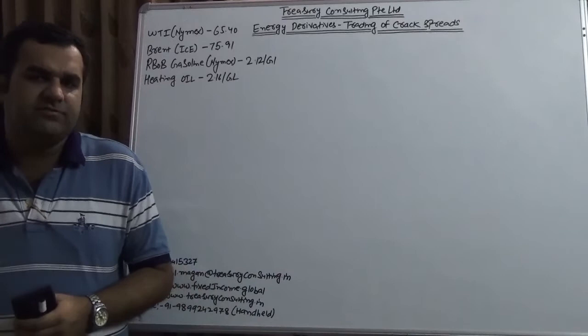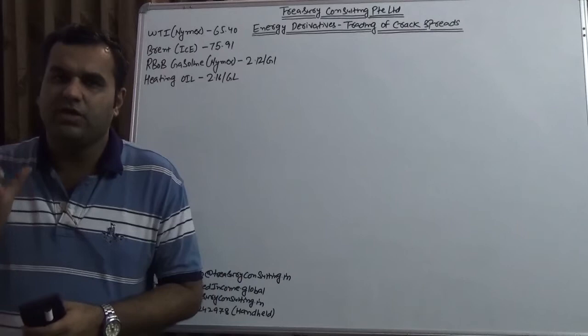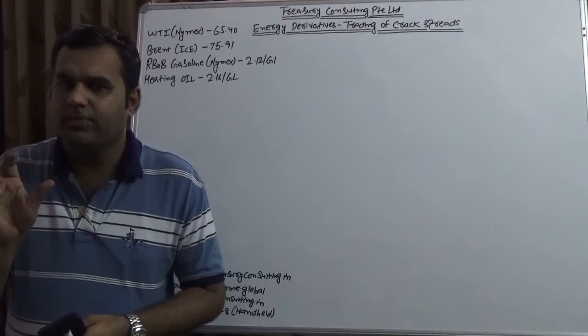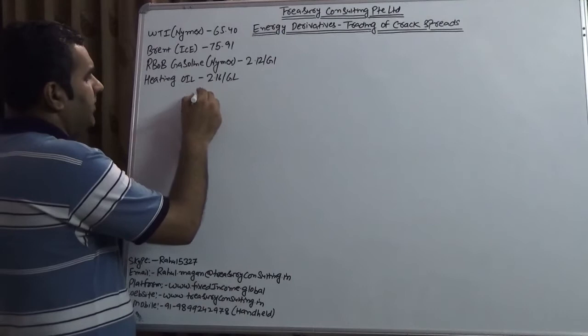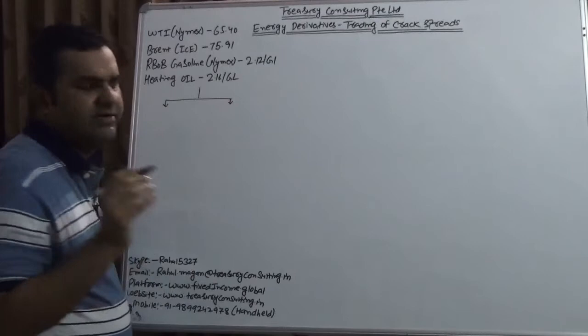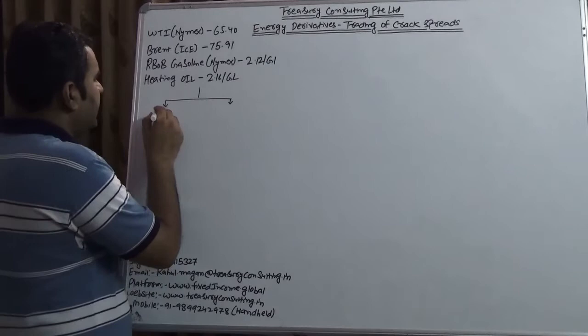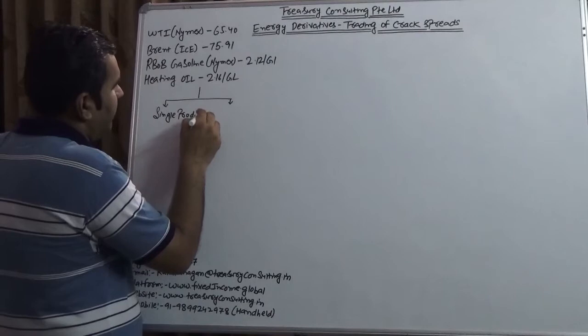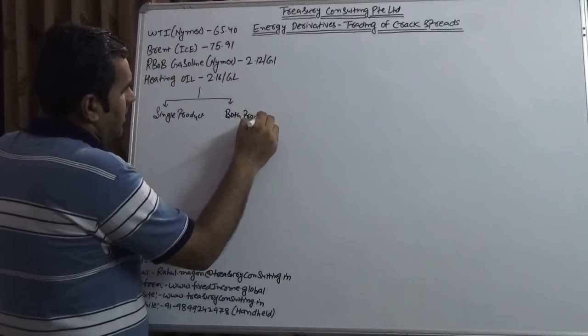There are two ways of doing a crack spread. One way is when you take both the components — and both will divide it into two parts each. In oil trading we never use the word 'component'; we definitely use the word 'products.' So, one way is when we are taking a single product and one way is when we are taking both products.